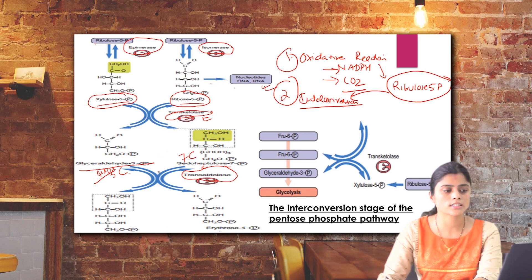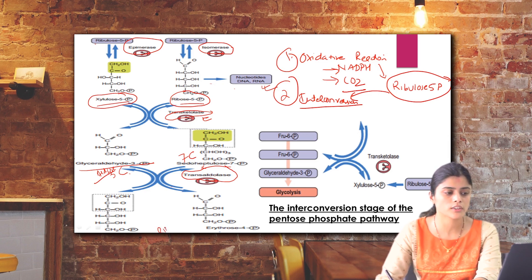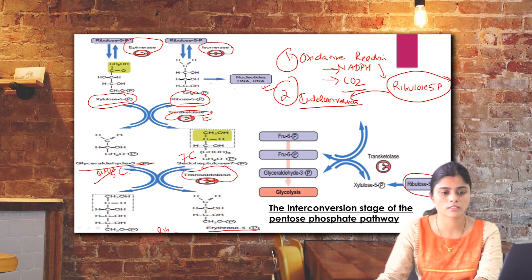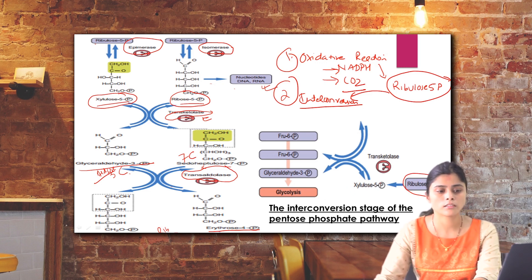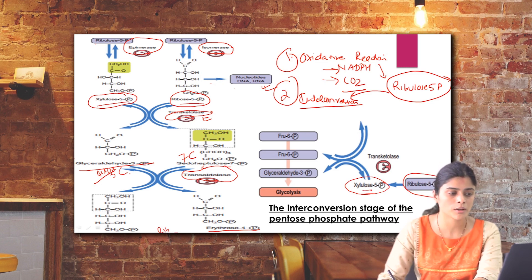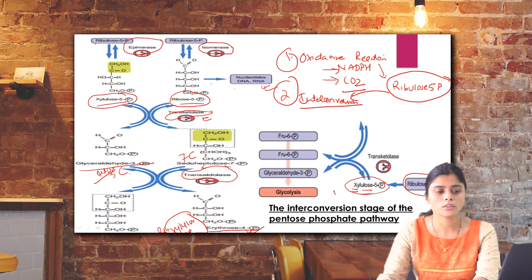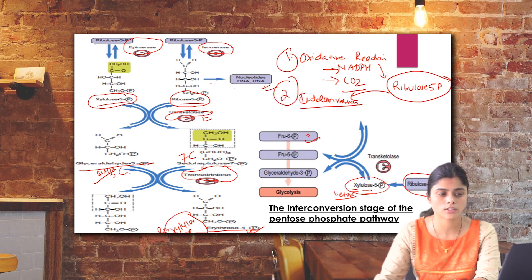The transaldolase reaction occurs between glyceraldehyde 3-phosphate and sedoheptulose 7-phosphate to give fructose 6-phosphate and erythrose 4-phosphate. Then xylulose 5-phosphate with erythrose 4-phosphate, again via transketolase, gives the important HMP shunt products fructose 6-phosphate and glyceraldehyde 3-phosphate.